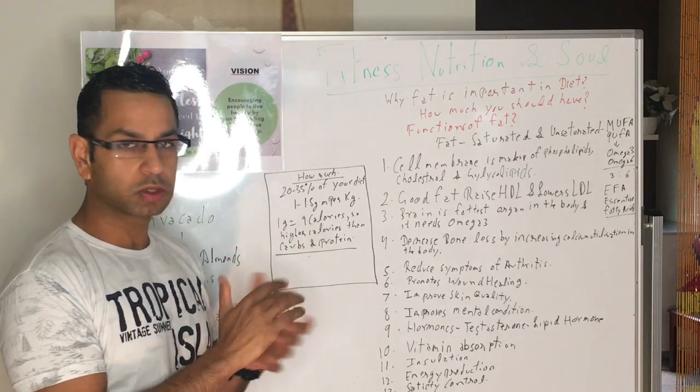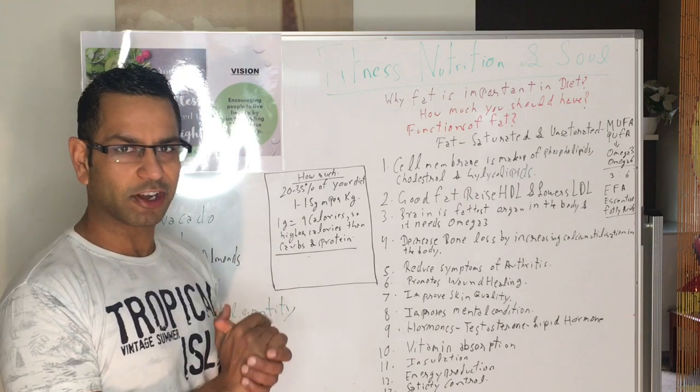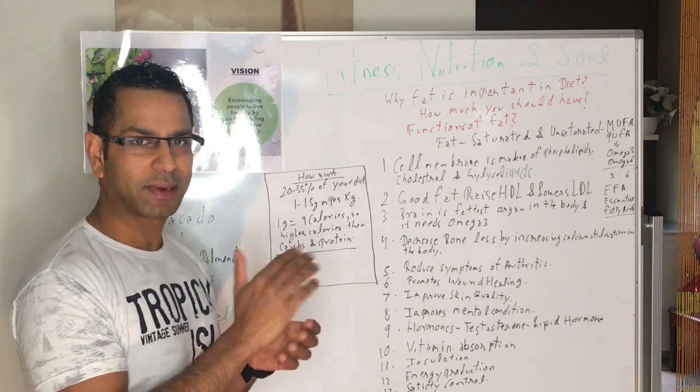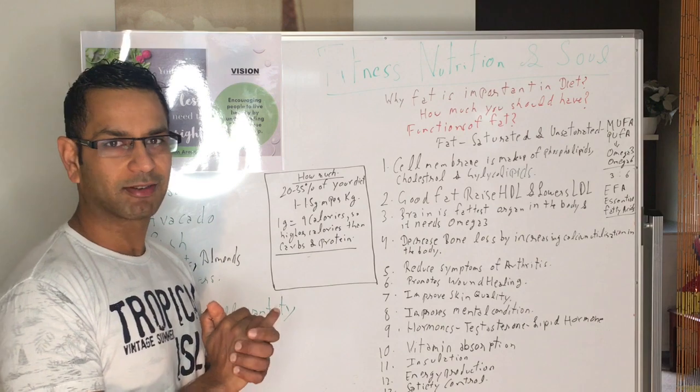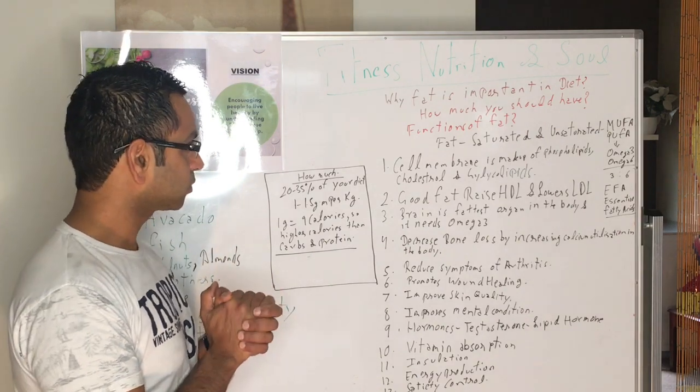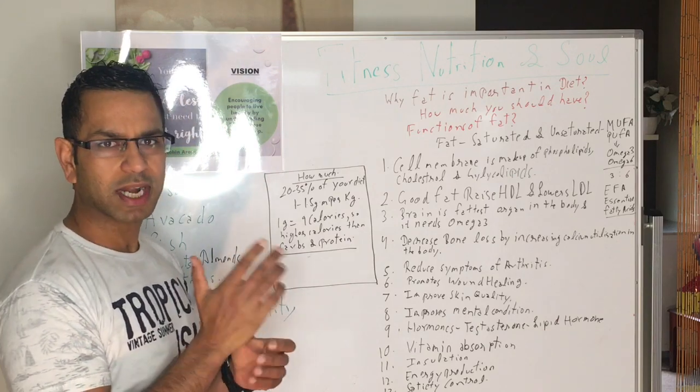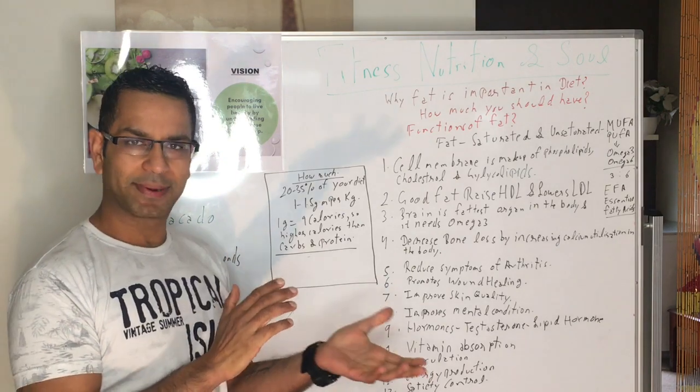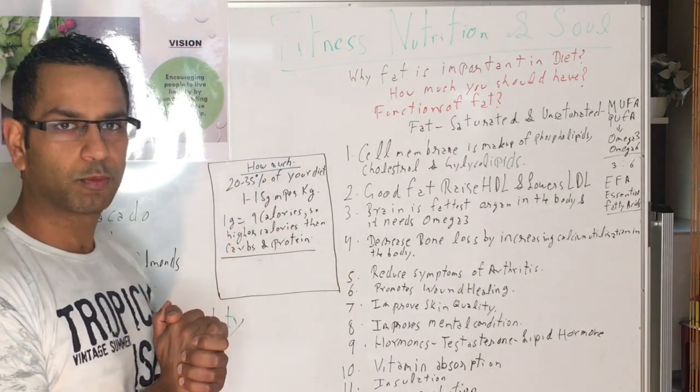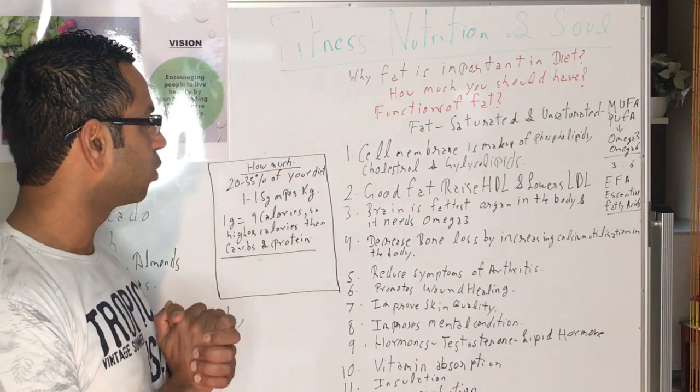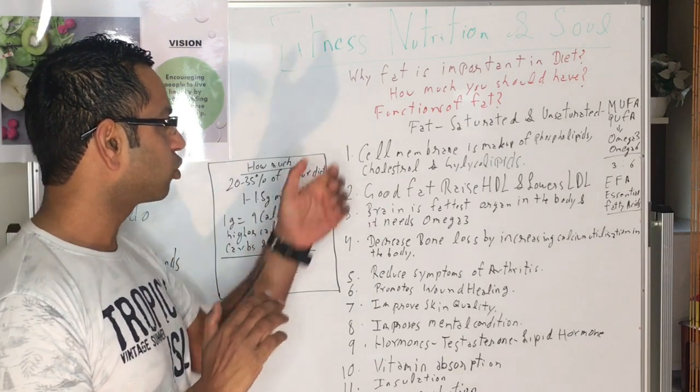But now the finding is it's not the fat. Now they're blaming the carbs, but even carbs is not the cause of obesity either. It's the overall calories and the type of food you eat. In this video we're going to learn about why fat is important in diet, how much we should have, and what are the functions of fat. I believe in a balanced diet rather than eliminating any macronutrient. First of all, we need to see that fat is divided into saturated fat and unsaturated fat.